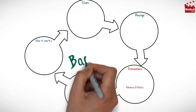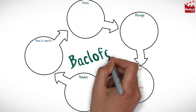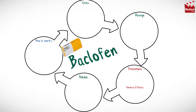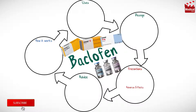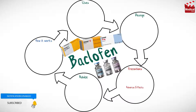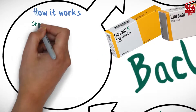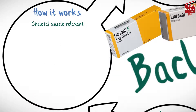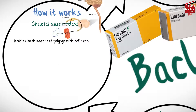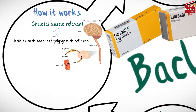In this video we'll briefly discuss what is baclofen, how it works, what it's used for, the dose and side effects, contraindications and precautions. Baclofen is a skeletal muscle relaxant drug that inhibits both monosynaptic and polysynaptic reflexes within the spinal cord, resulting in decreased spasticity.